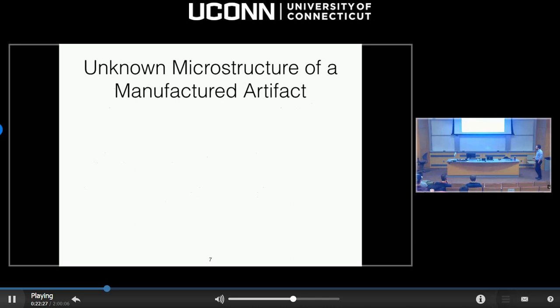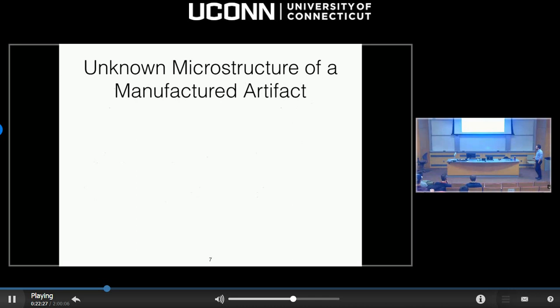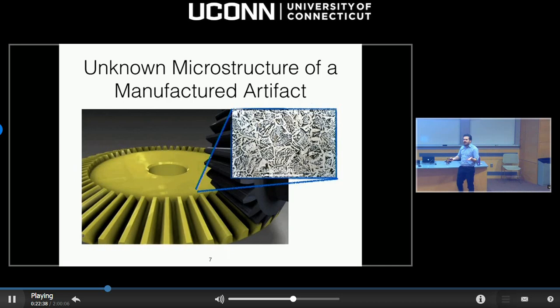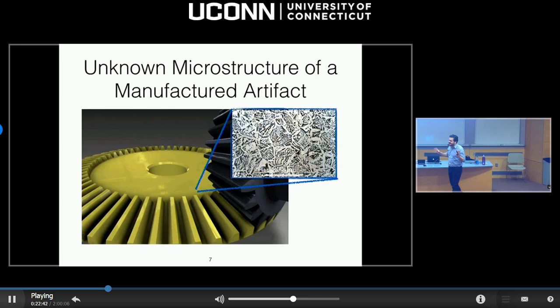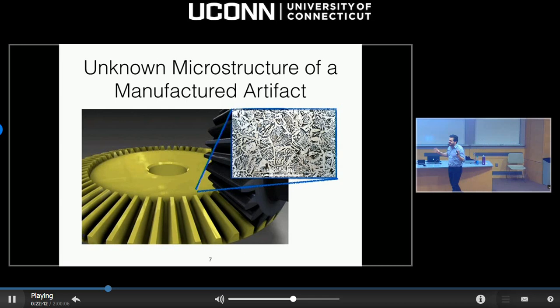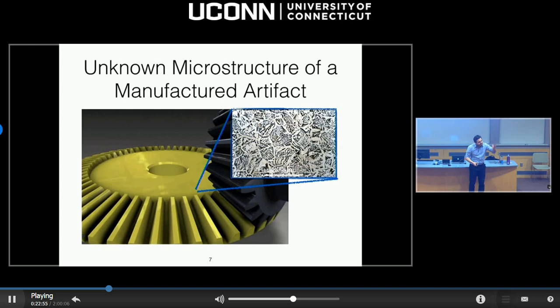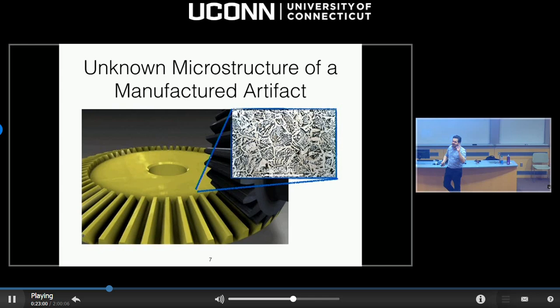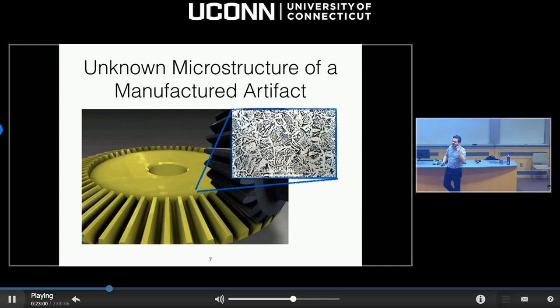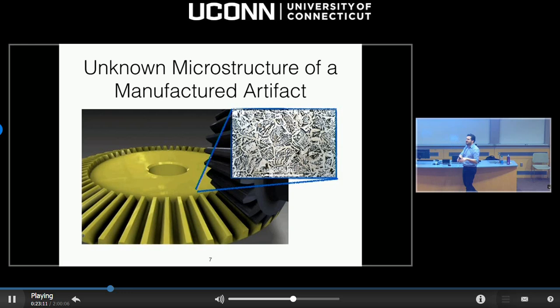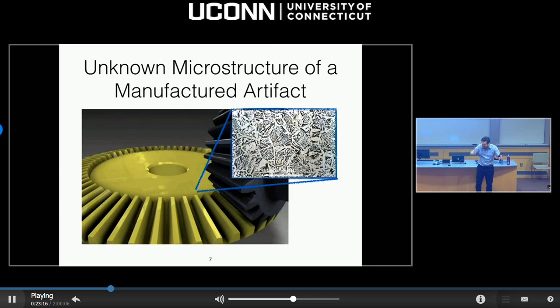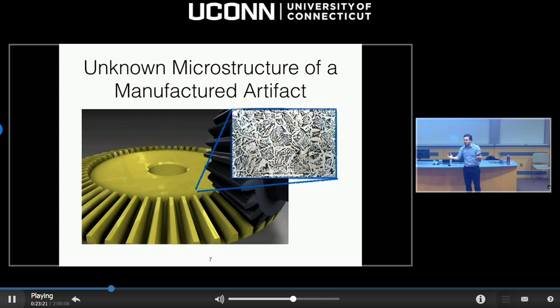Let me give some examples. Consider the microstructure of a manufactured artifact — say, a bevel gear. Every time you make it with the same raw material, the statistical properties of the microstructure are the same, but if you look at different gears at the same spot, you'll see a different microstructure. The microstructure is not random — it's something very specific, you just don't know what it is. Every new bevel gear is slightly different, and the only way to know its microstructure is to break it into thin pieces and put it in an electron scanning microscope.